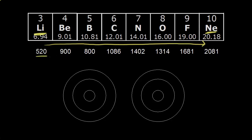Lithium is positive 520 kilojoules per mole, beryllium goes up to 900 kilojoules per mole, and in general we see this increase in ionization energies going over to neon. So going across a period results in an increase in ionization energy.